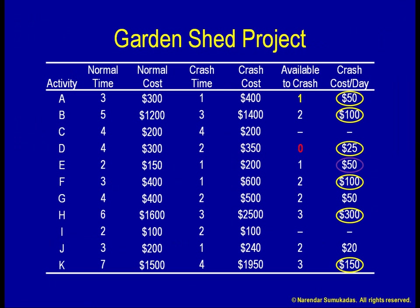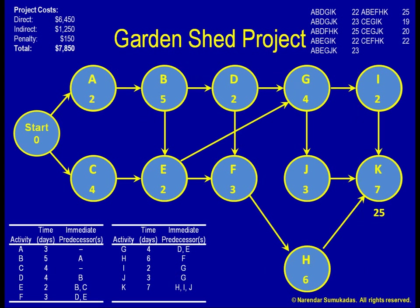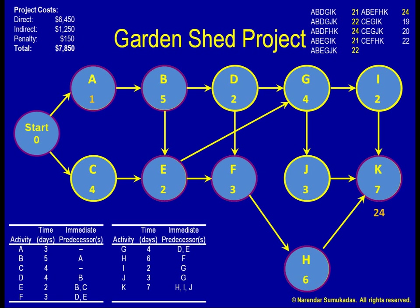Once again, crashing A is the cheapest way to crash all critical paths, so let me crash it by one more day. I have now exhausted the days available to crash for A. Bringing A down to one day cuts down a number of my paths, including the critical paths, and brings my project duration down to 24 days. There are still two critical paths — A, B, D, F, H, K and A, B, E, F, H, K — each one now at 24 days. My direct costs have gone up by another $50, indirect costs have gone down by another $50, and penalty costs have gone down by another $30. My total project cost for the 24-day schedule has gone down to $7,820.